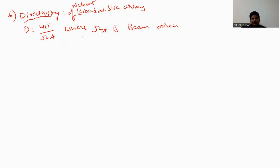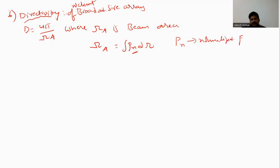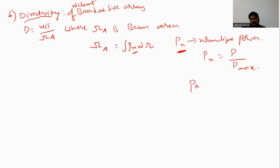The formula for Ωa is equal to the integral of the normalized power pattern Pn. The normalized power pattern Pn is equal to P divided by P-max. Here we are not having any power components directly. The relationship between power pattern and field pattern, as discussed in the first unit, is: power pattern equals field pattern squared.